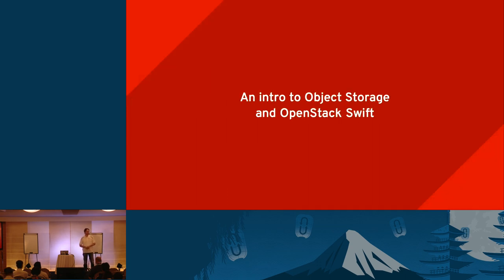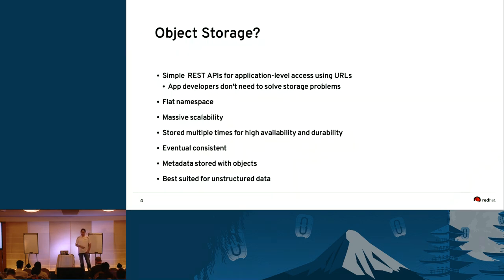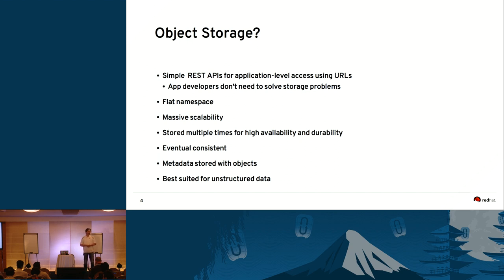Let's start with a basic introduction into object storage itself — what it is and what's the difference between traditional storages like block or file storage. It's basically a very simple way to talk to your storage system on an application level. You talk to your storage system using a very simple REST API interface, which means you have an HTTP URL for each of your objects and can access data using that URL.